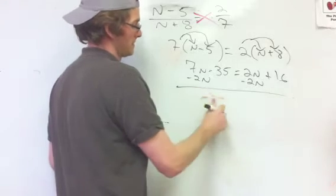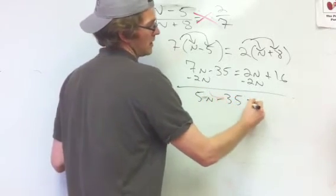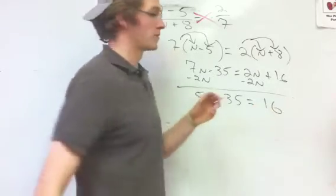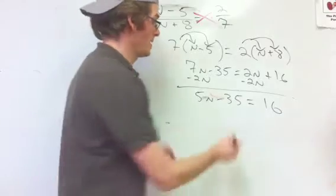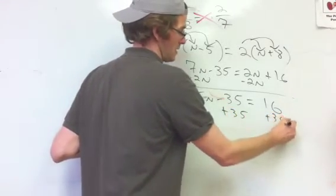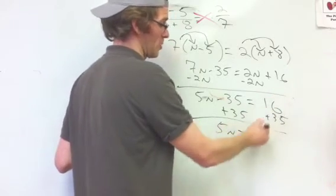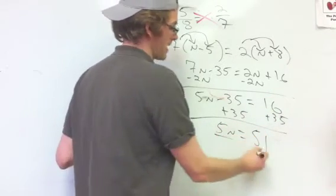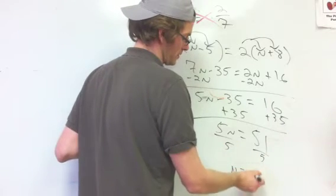We have 5n minus 35 equals 16. So I'm going to say that clearly this time. 5n minus 35 equals 16. Add 35 to both sides. Now we have 5n equals 51, and divide each side by 5